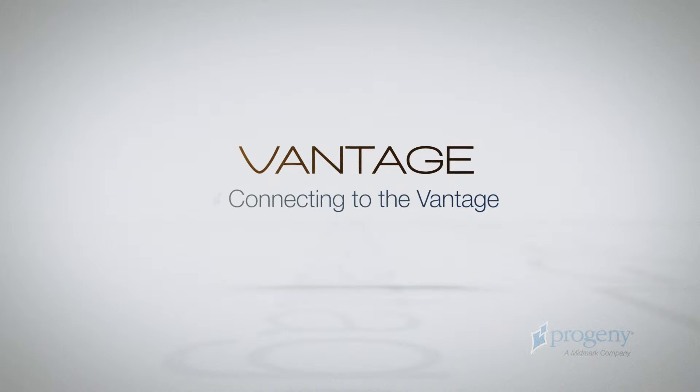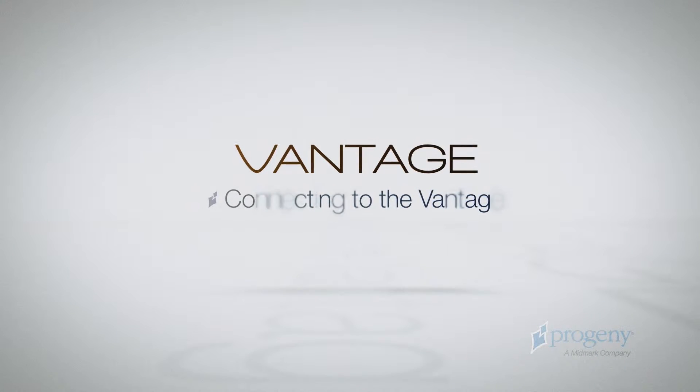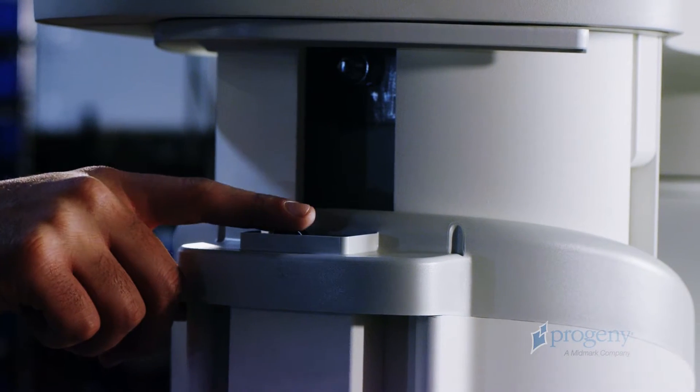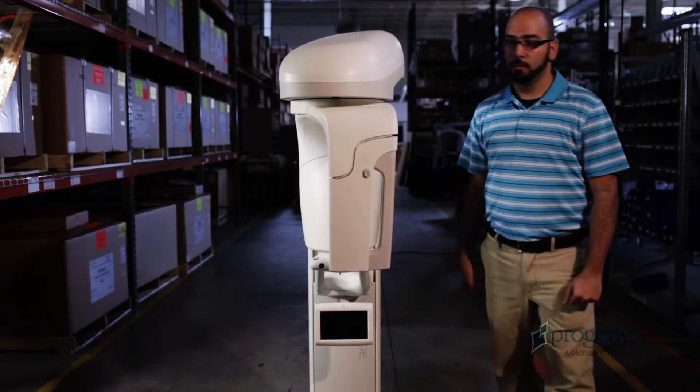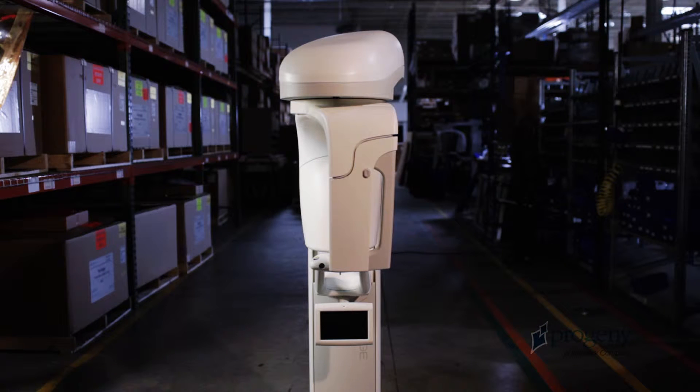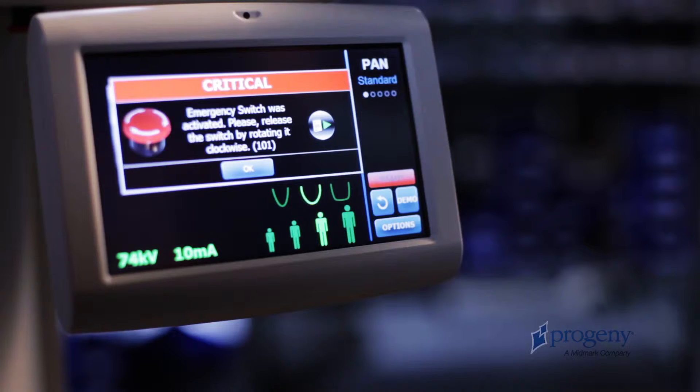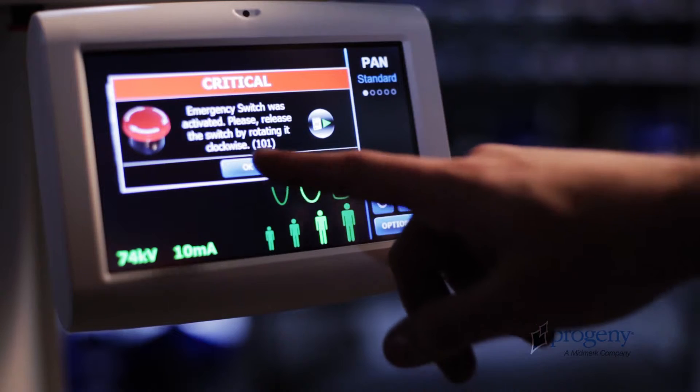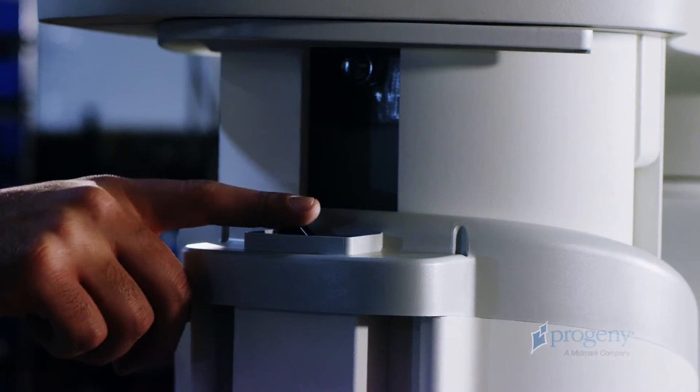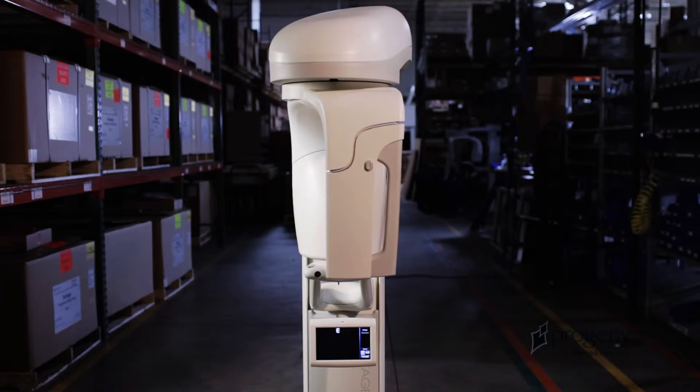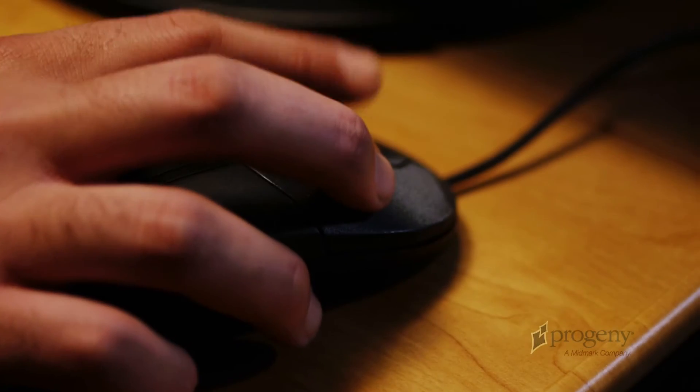Connecting your computer to the Vantage system can be set up either through Progeny Imaging image management software or through Progeny's Twain interface. Power on the Vantage by flipping the switch located at the rear of the main column. Make sure that the emergency stop switch located below the patient table has not been pressed. If so, rotate the switch to Release, Power Cycle, and Energize the Vantage again.